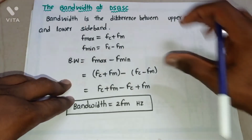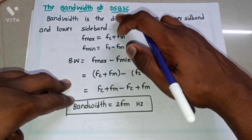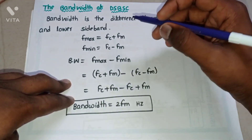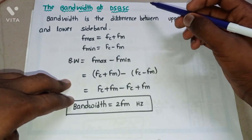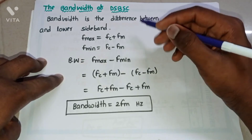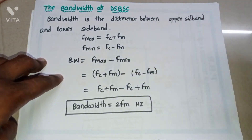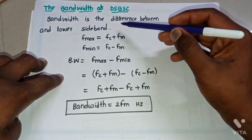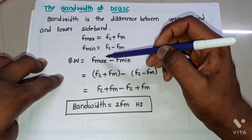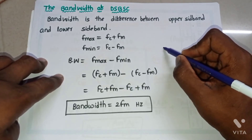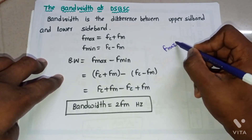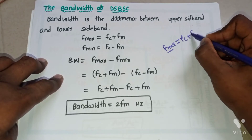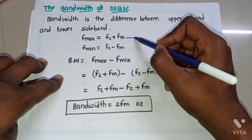Hello friends. In this video we will discuss the bandwidth of the DSBSC wave. The DSBSC wave has two sidebands — one upper sideband and one lower sideband — and no carrier. Bandwidth is the difference between the upper sideband frequency and the lower sideband frequency. The upper sideband has the maximum frequency: Fmax = Fc + Fm.